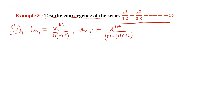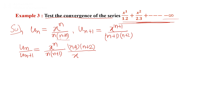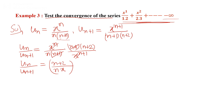We take the ratio u_n / u_(n+1): we get [x^n / (n(n+1))] divided by [x^(n+1) / ((n+1)(n+2))]. The (n+1) terms cancel and x^n cancels, giving us (n+2) / (nx). This is u_n / u_(n+1), the ratio of the nth and (n+1)th terms.